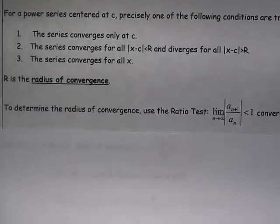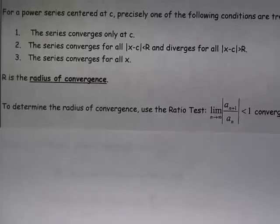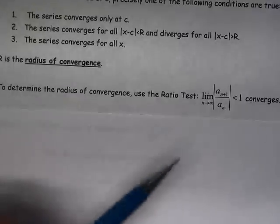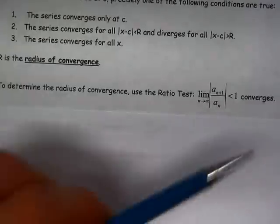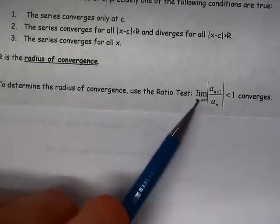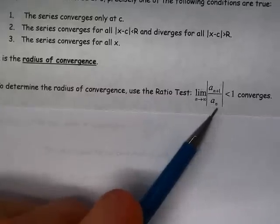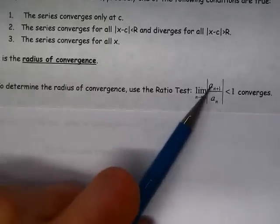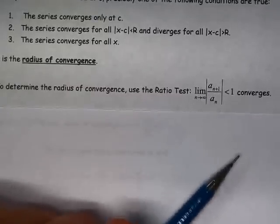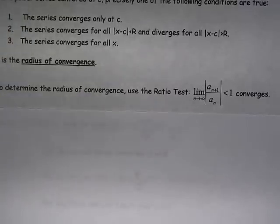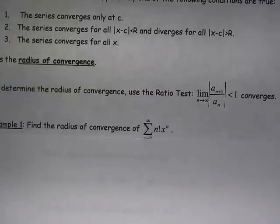And we're going to use the ratio test for this. We're going to use that ratio test, the same one we learned earlier in Chapter 9. And what the ratio test tells us is that if we take the limit as n approaches infinity of the next term over the previous term, so a sub n plus 1 over a sub n, and that's less than 1, then that series is going to converge. So let's look at how we use that.